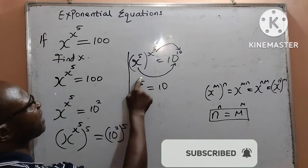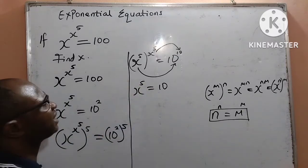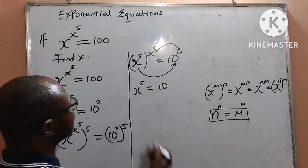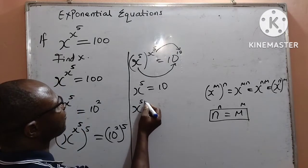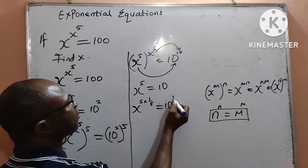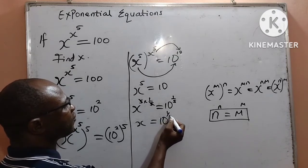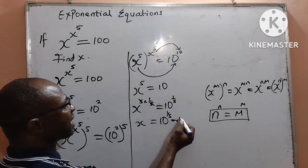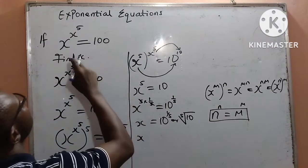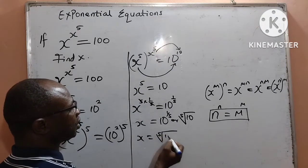Now that I have x to the power of 5 on the left equal to 10, to remove this 5 from x I will simply raise both sides to the power of 1 over 5. That becomes x to the power of 5 multiplied by 1 over 5 equals 10 to the power of 1 over 5. The 5s cancel to give x equals 10 to the power of 1 over 5, which is the same as the 5th root of 10. In conclusion, the value of x is equal to the 5th root of 10.